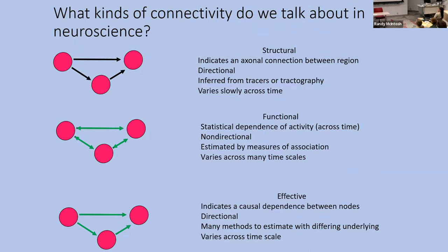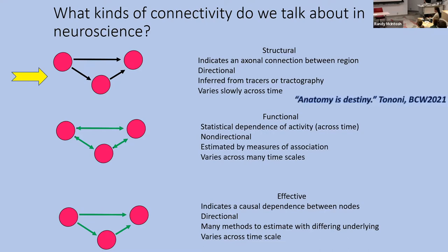Structural connectivity indicates the axonal aspects — there is a directional inference in place. Functional, again, is statistical dependencies; it requires some sort of model to understand how they can influence one another. Let's talk about structural first. I take this quote from Giulio Tononi from a brain connectivity workshop a few years back: 'Anatomy is destiny.' I'll let you just let that sink in.